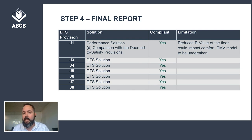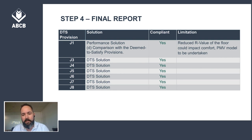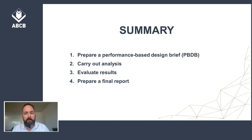Thermal comfort may have been impacted, and the group agreed on undertaking a thermal comfort analysis to ensure thermal comfort is achieved. A predicted mean vote of negative one to plus one is to be achieved across not less than 95% of all occupied zones for not less than 98% of the annual hours of operation of the building.